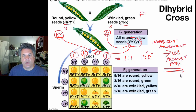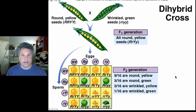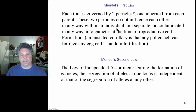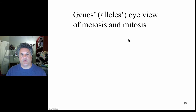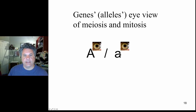Next we will examine sex linkage — the phenomenon of sex linkage — and then move on to recombination between genes on the same chromosome. But before either of those topics, we will discuss the gene's-eye or allele's-eye view of Mendelian inheritance, examining Mendel's first and second laws in terms of chromosomal behavior, which leads to the chromosomal theory of inheritance — that Mendelian determinant genes are carried on chromosomes.